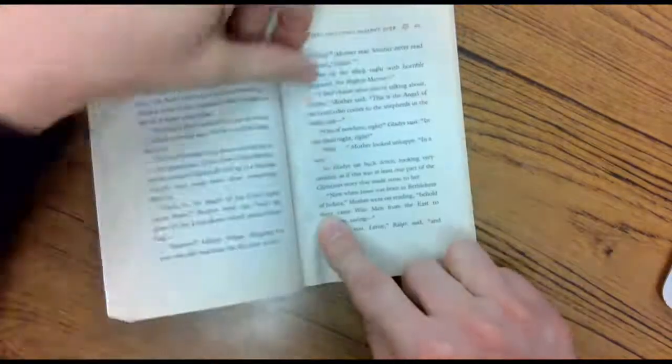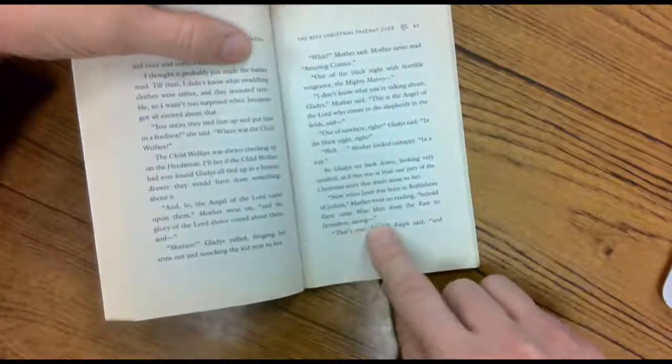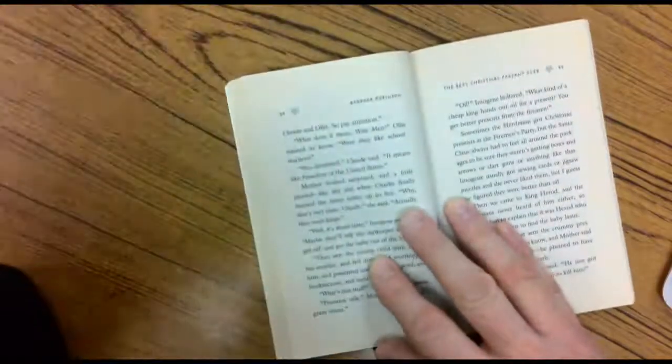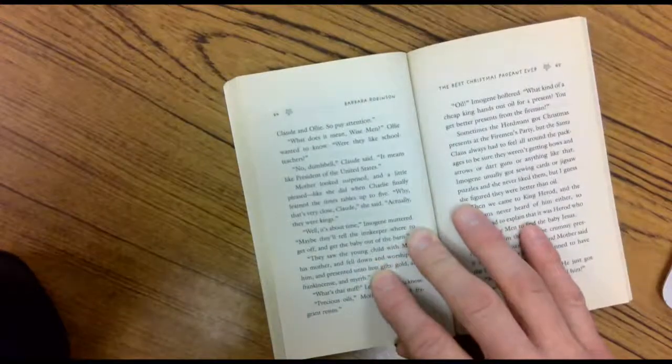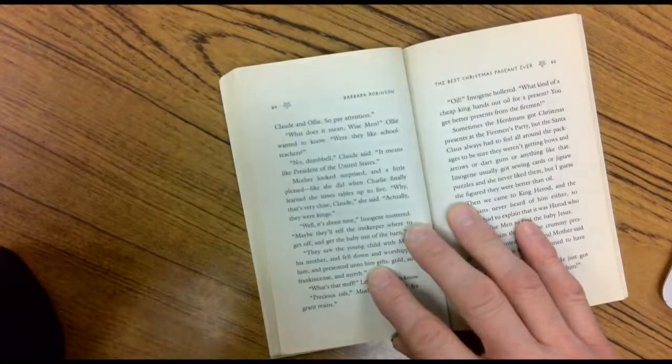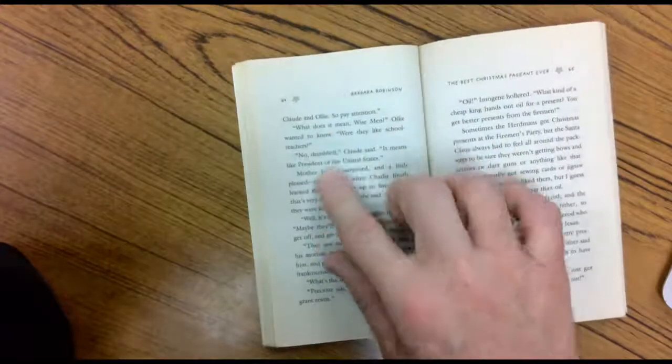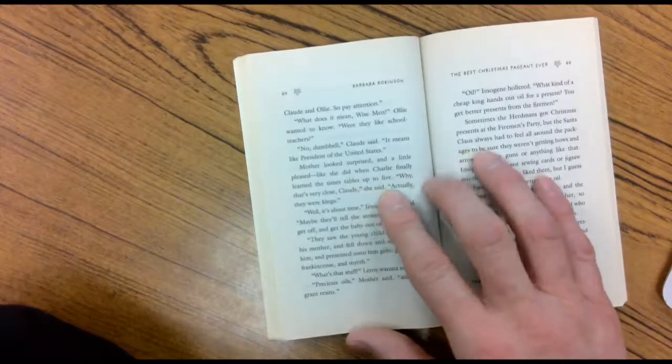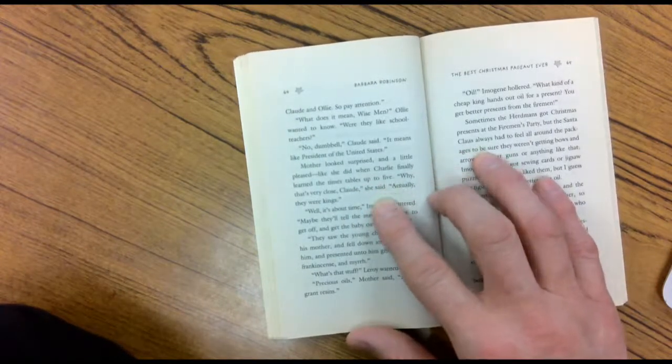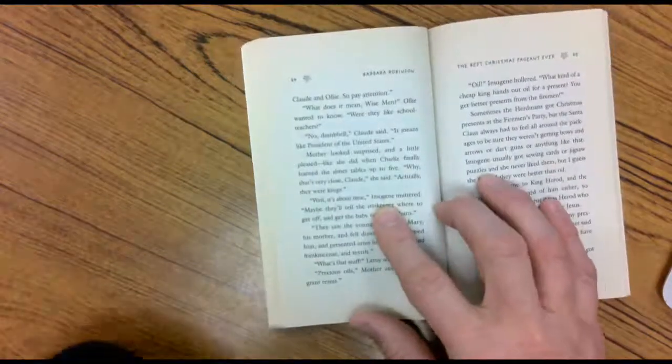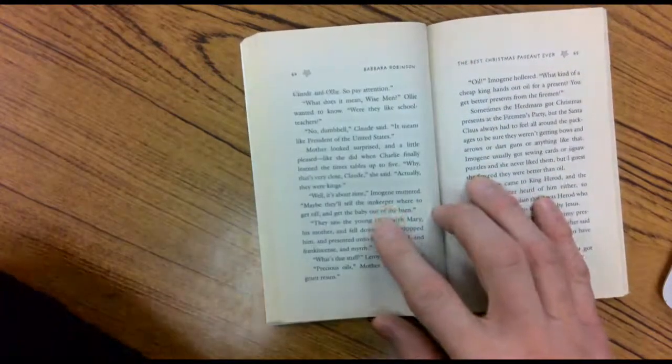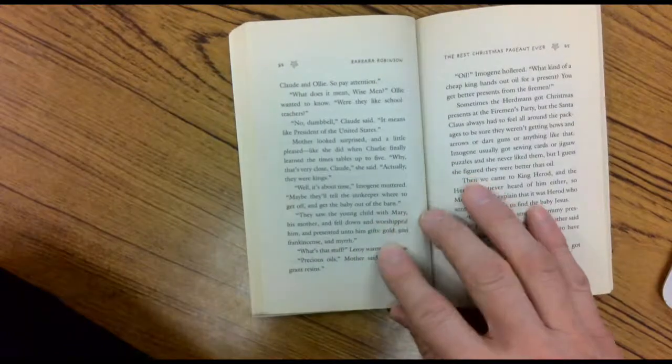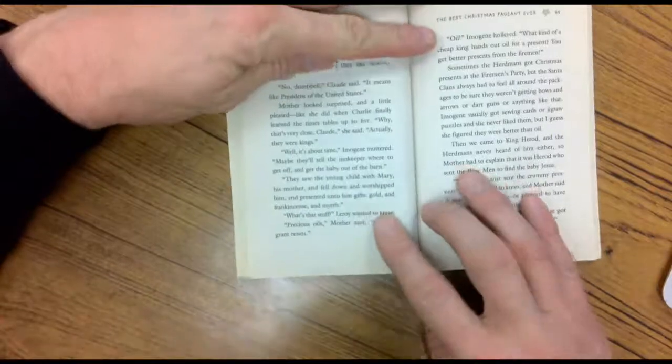Now when Jesus was born in Bethlehem of Judea, Mother went on reading. Behold, there came wise men from the east to Jerusalem saying, That's you, Leroy, Ralph said. And Claude and Ollie. So pay attention. What does it mean, Wiseman? Ollie wanted to know. Were they like school teachers? Yeah, us school teachers are so smart. I love this part of the story too. No, Dumbbell, Claude said. It means like President of the United States. Mother looked surprised and a little bit pleased like she did when Charlie finally learned the timetables up to five. Well, that's very close, Claude. She said, Actually, they were kings. Well, it's about time, Imogene muttered. Maybe they'll tell the incumbent where to go and get that baby out of the barn.